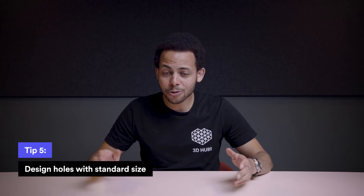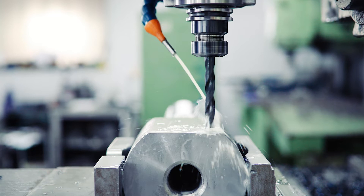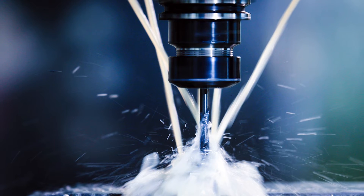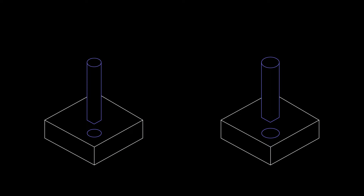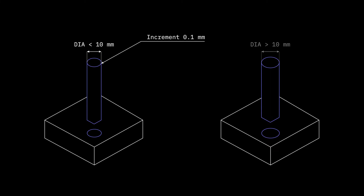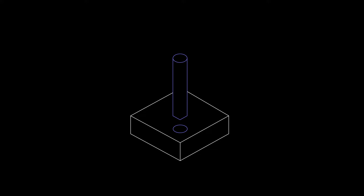Tip five: design holes with standard size. Holes can be CNC machined fast and accurately using standard drill bits. For non-standard sizes, the hole must be drilled with an end mill tool, potentially increasing the cost. To minimize costs, design holes with a diameter that is an increment of 0.1mm for diameters up to 10mm, and 0.5mm above that. Also, limit the depth of all holes to four times their diameter — deeper holes can be manufactured but will increase cost as they are problematic to machine.